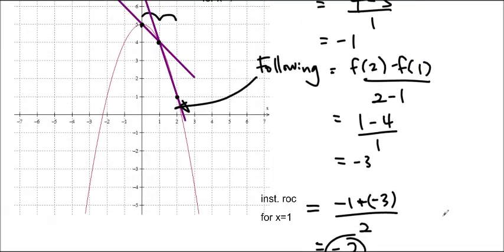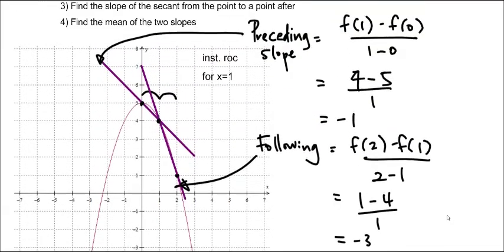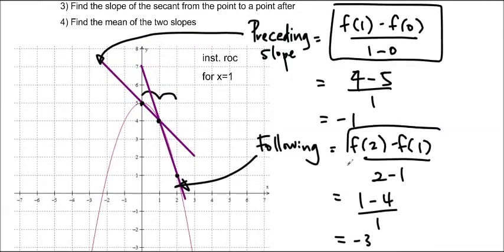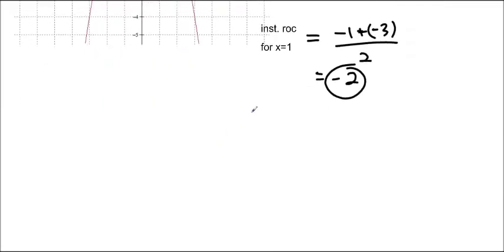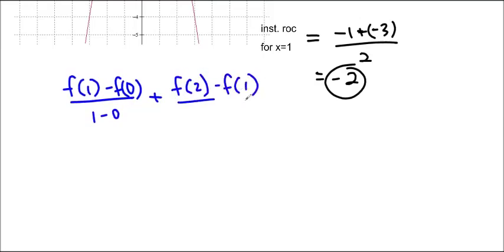Now if you think about what we just did, you might notice that actually I've taken this plus this and then divided by 2. So I'm going to write that out for us. We took f of 1 minus f of 0 over 1 minus 0 plus f of 2 minus f of 1 over 2 minus 1. And by the way, you could have used any interval. I like to use an interval of 1 because it makes it convenient in the bottom. We divide that by 2. That's the mean. You add two numbers and you divide it by the number of numbers.